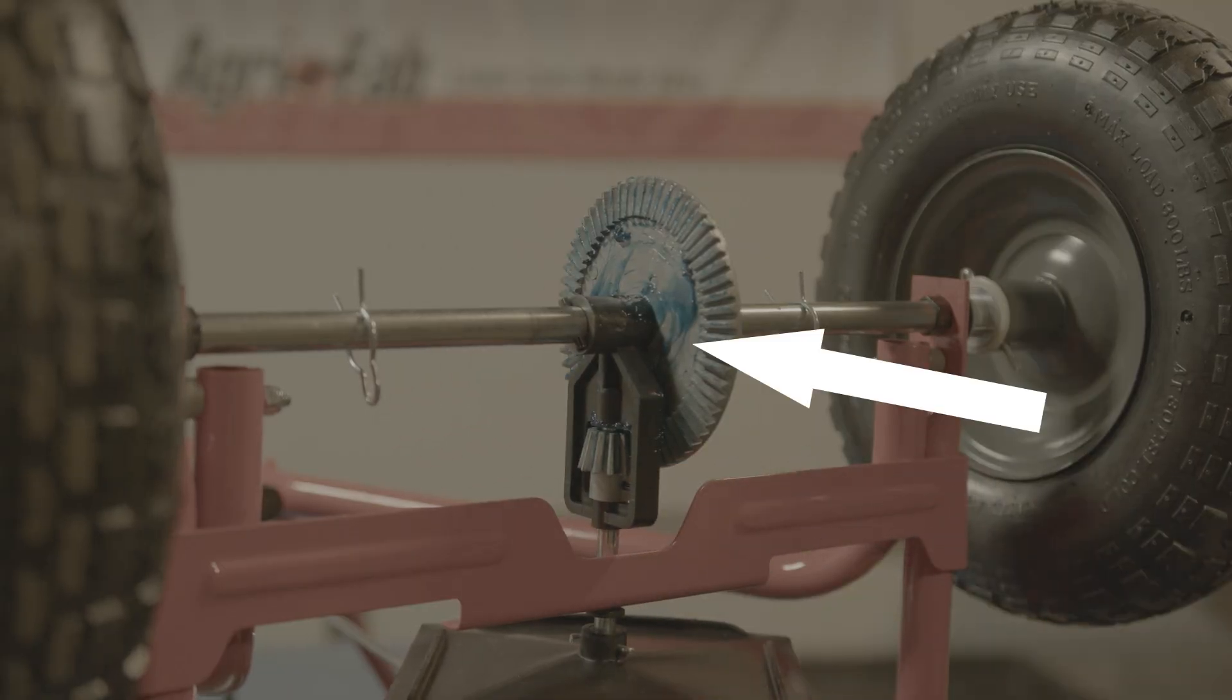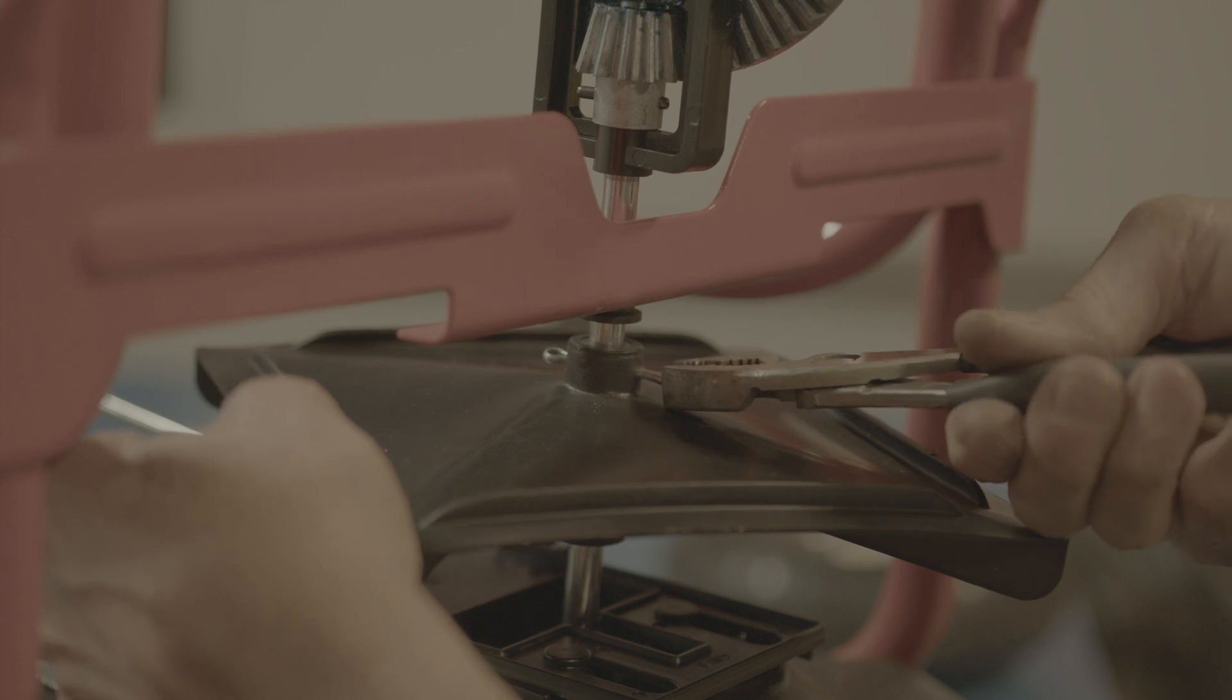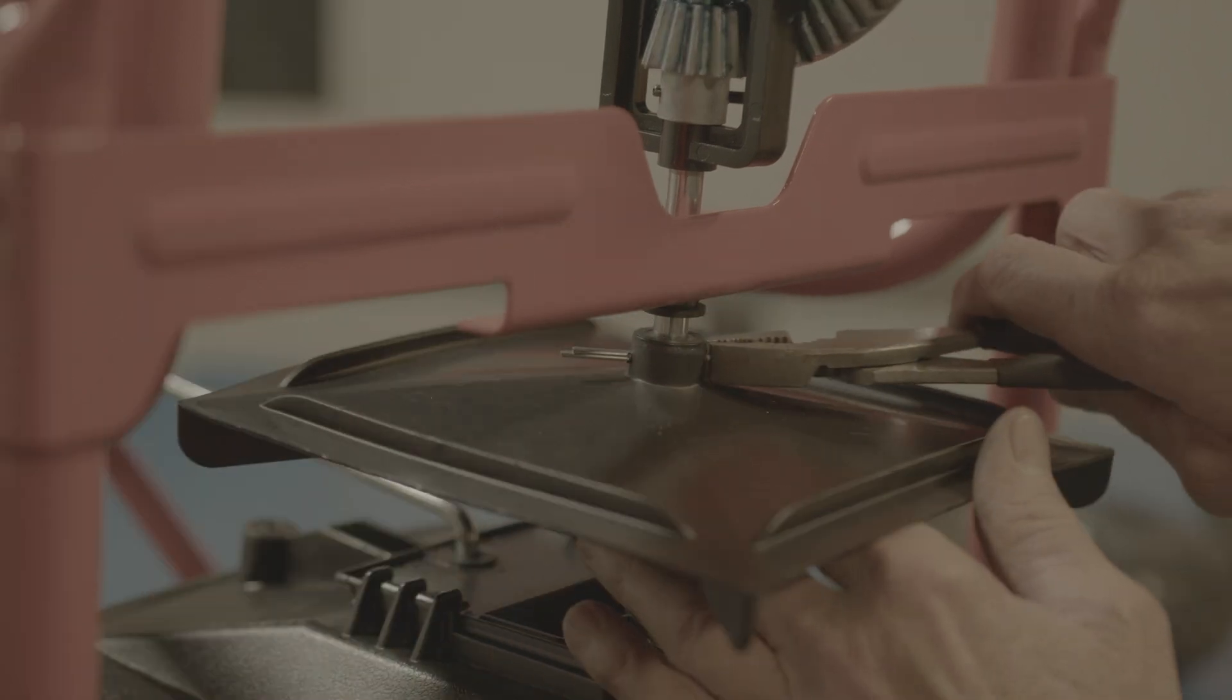Take note of the orientation of the gearbox. Referencing this view, you'll want the gearbox axle pin facing the left. Then remove the pin securing the spreader plate to the gearbox assembly.